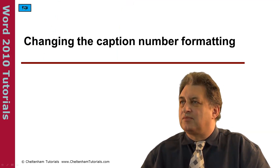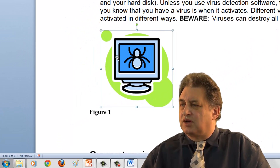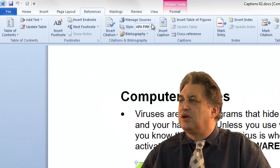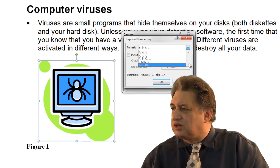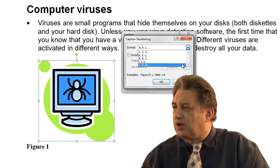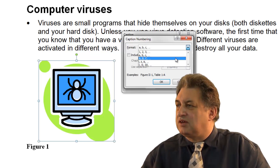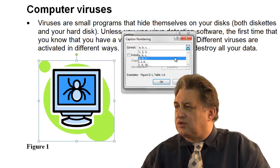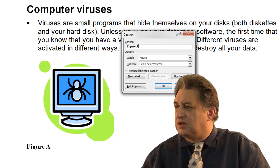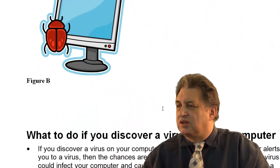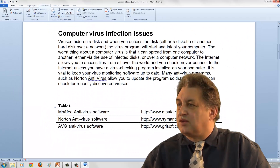Changing the caption number formatting. Here we've got a picture and it's got a caption underneath it. I've clicked on the picture to select it. If I click on the References tab, go to Insert Caption, from here I can click on the Numbering button, and from here I can change the numbering system. So for instance, if I want Roman numerals instead of normal numbers, I could click here. If I wanted ABC in caps, small caps, or small letters, I could click there. I'll click on ABC in caps just so you can see the difference. I'll click on OK, and as you can see it's changed. Click on Close, and as you can see it's changed this one as well. That's basically how you change the numbering within the captions.